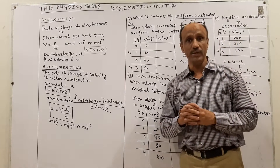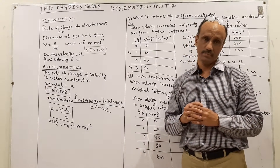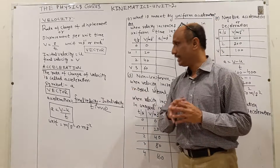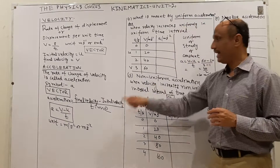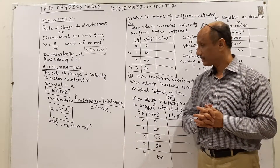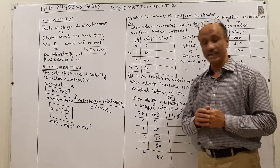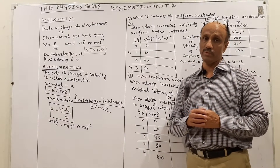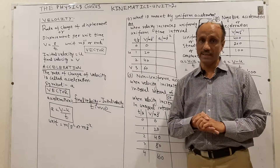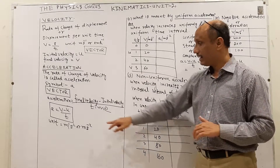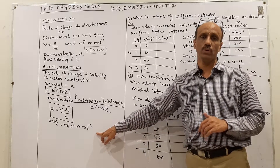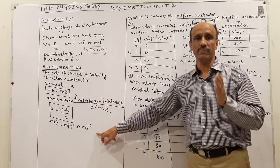The formula for acceleration is: acceleration equals final velocity minus initial velocity over time, that is a = (v − u) / t. This is a formula you must remember. The unit for acceleration is meter per second squared, written as m s⁻², which is the preferred unit.